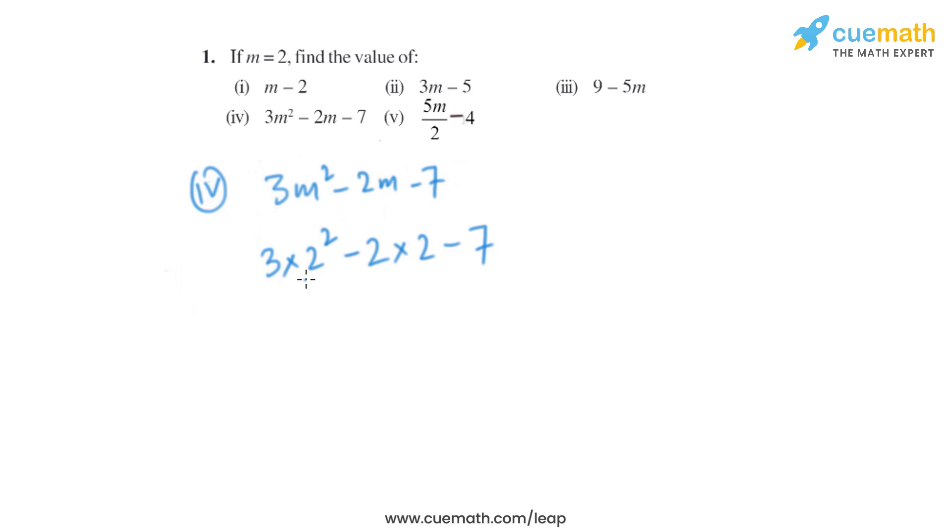So that 2 square is basically 4, so 3 into 4 is 12, 2 into 2 is 4, and that is minus 7. So when we solve it we will get 12 minus 4 is 8, and 8 minus 7 is 1.